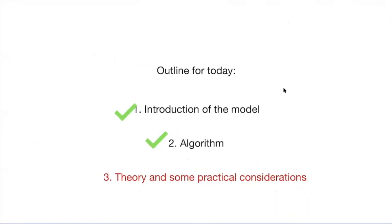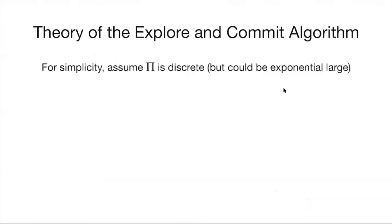Once we do exploration, we form a supervised learning dataset of features and reward vectors, then run a reward-sensitive classification algorithm on it and commit to that policy. Of course, to prove this algorithm works we have to tune the hyperparameter n, as we did in explore-and-commit for multi-armed bandit. Let's assume the policy class pi is discrete, though it could be exponentially large. You could replace this with a continuous policy class using VC dimension.